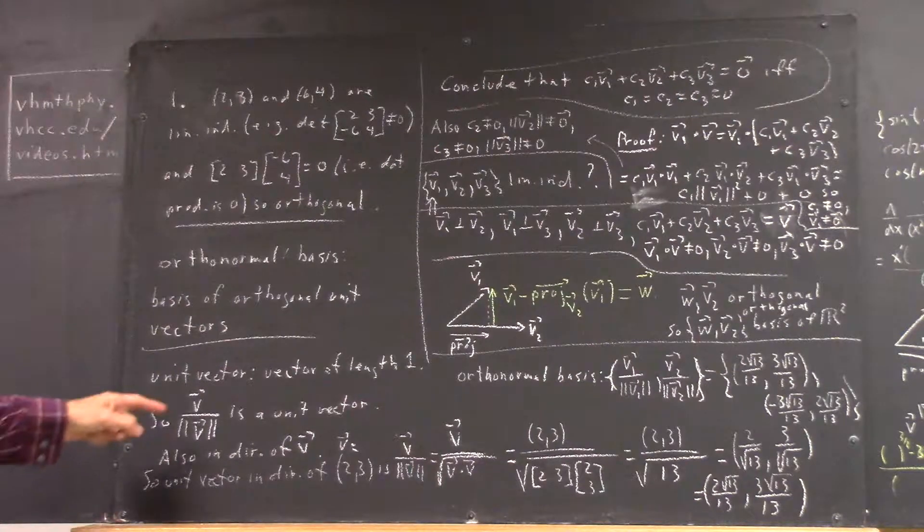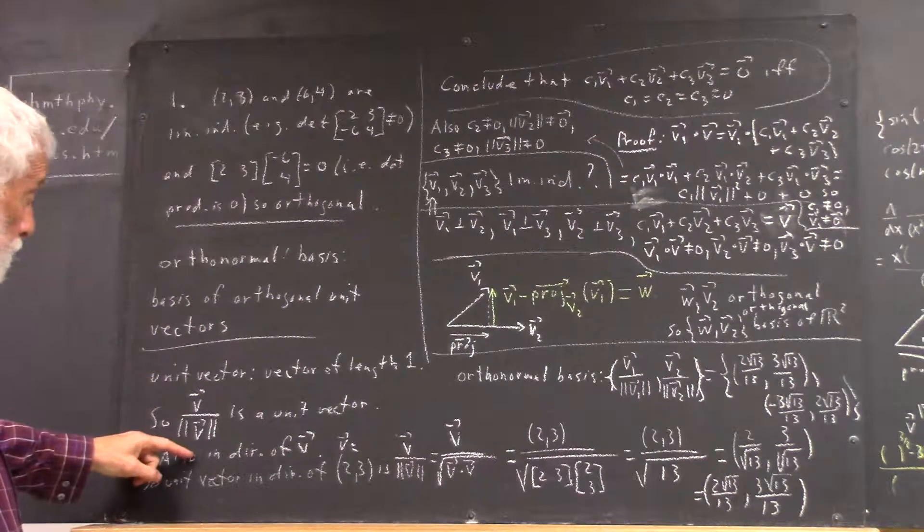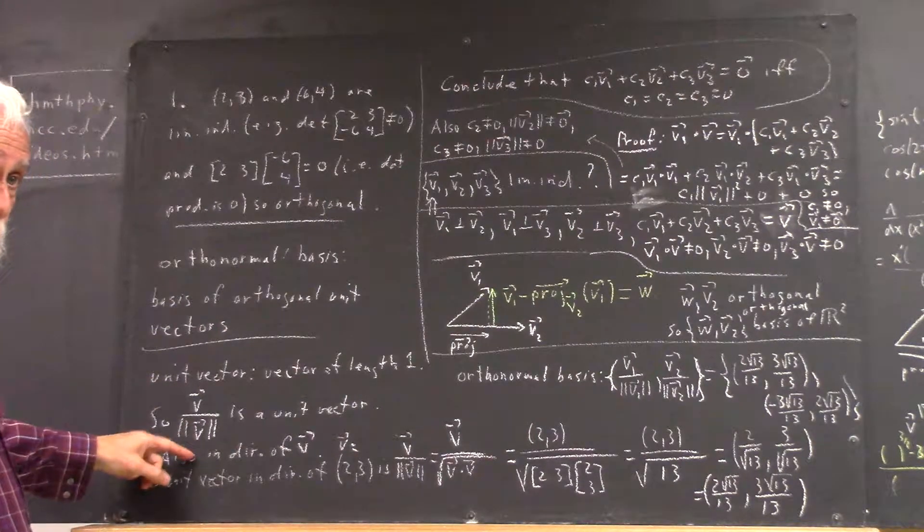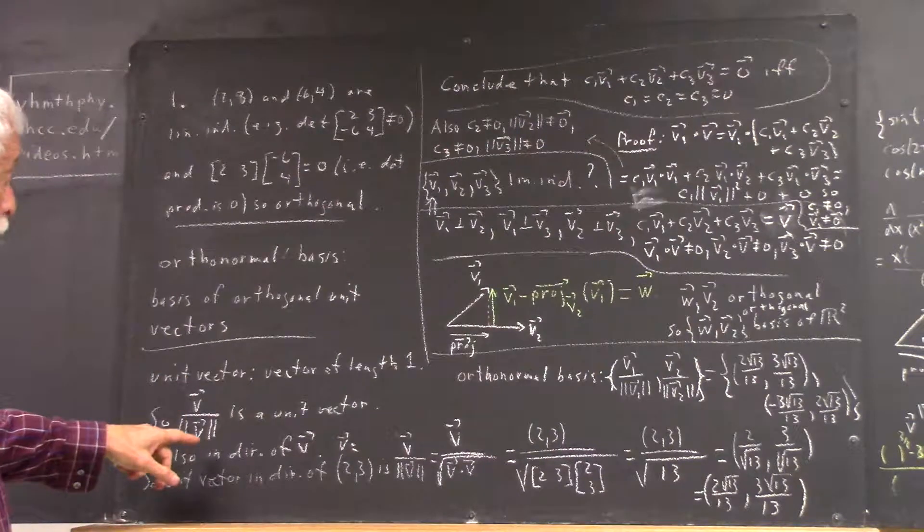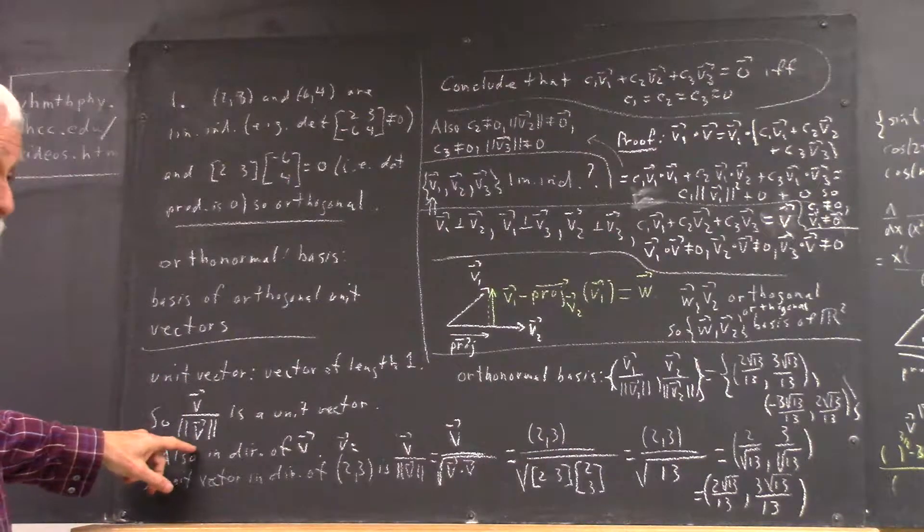In order to get a unit vector, we divide any non-zero vector by its magnitude. And of course, if it's a zero vector, we can't divide by its magnitude, because its magnitude would be zero, and you can't divide by zero.